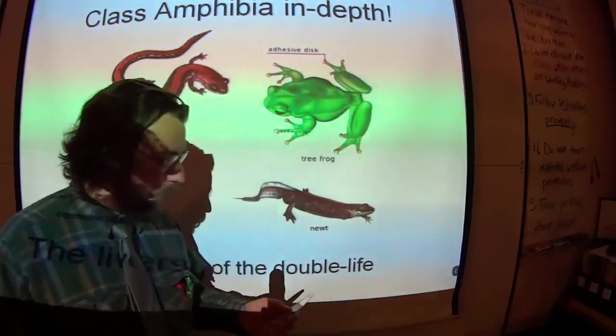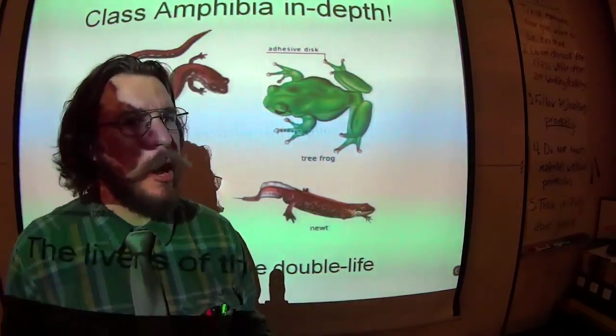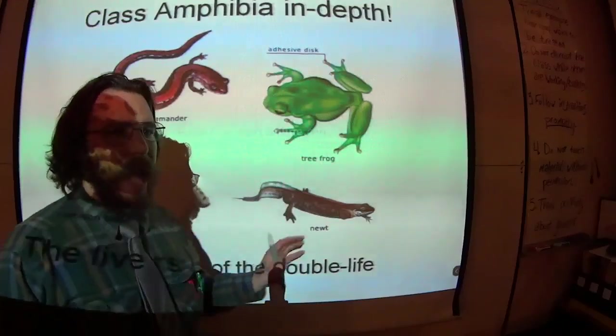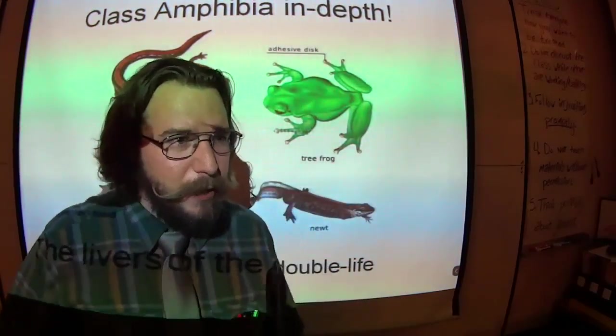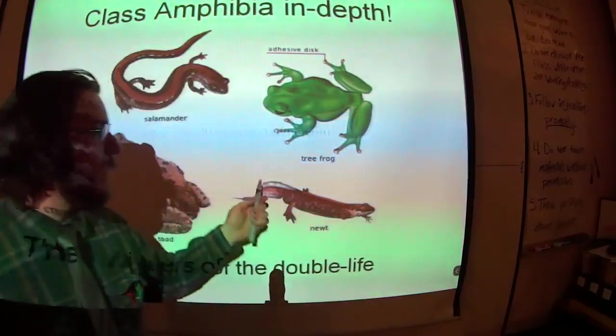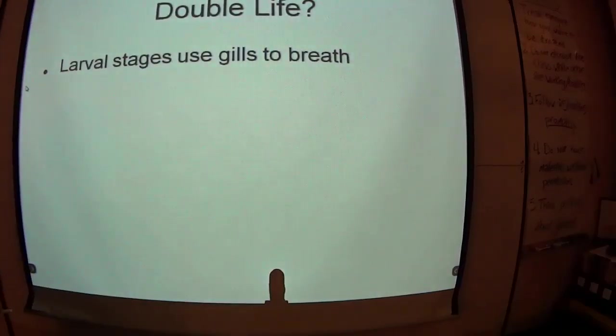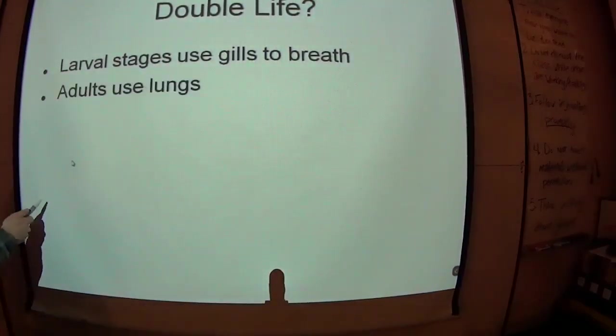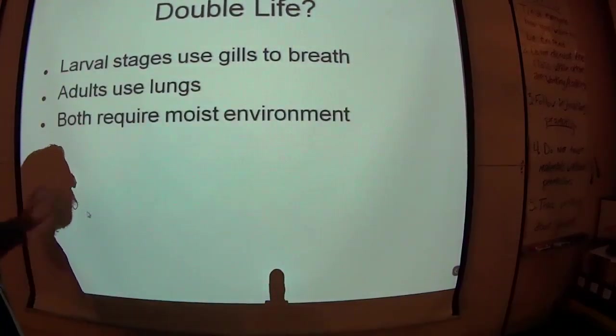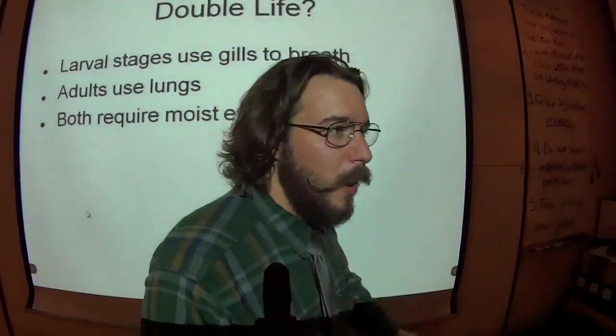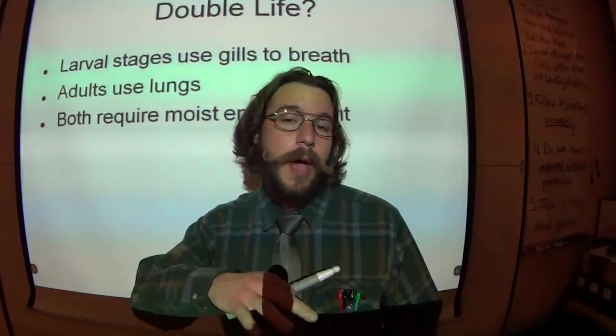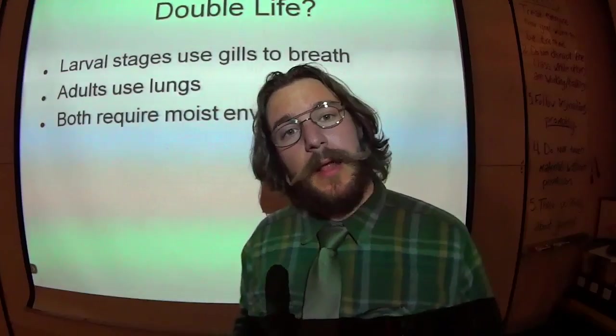Like it's not just like, oh, I got hormones and acne and felt awkward for a couple of years. Like their entire body and position and where they live changed drastically. Amphibians, they're crazy. So the larval stages, like I just said, they use gills to breathe. Adults use the lungs. However, both of them usually require a moist environment because amphibians don't have any waterproofing on their skin like we do.